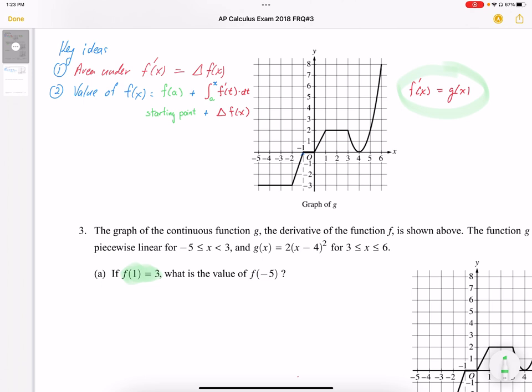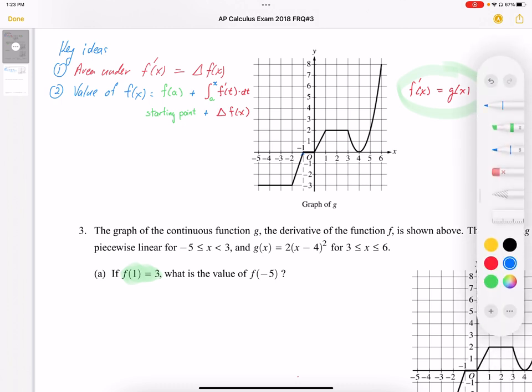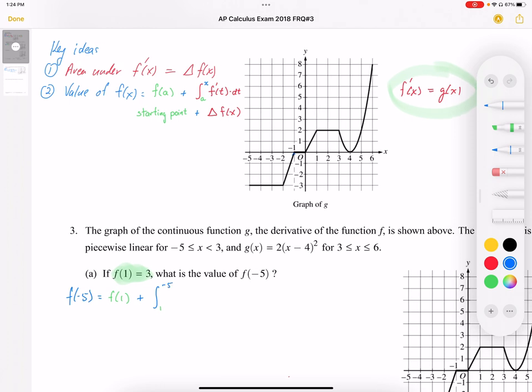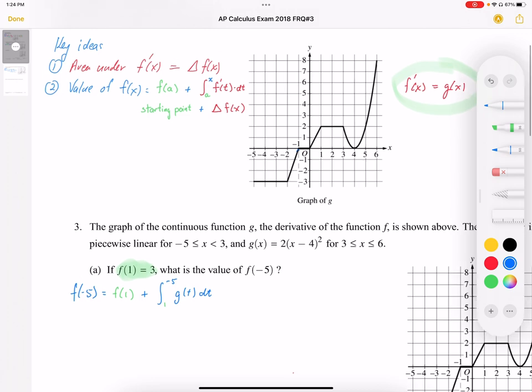To find f at negative 5, we need to then find the displacement from that starting point. So f of negative 5 is equal to the starting coordinate, which is f of 1, plus the displacement from the starting point of 1 all the way to the value that we want to establish, which is negative 5. That's going to be underneath the g graph. So I'm just going to use t so that I'm not mixing up with my x values.